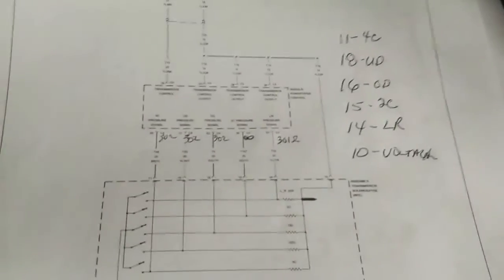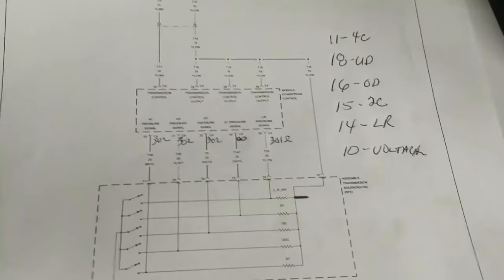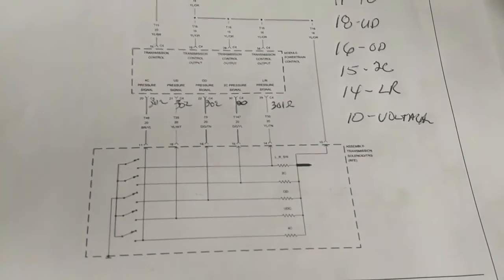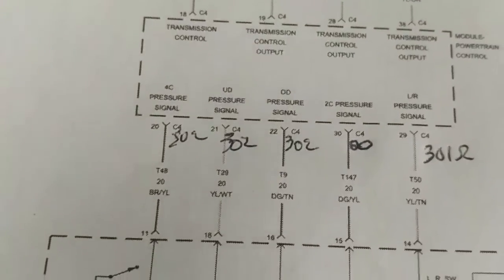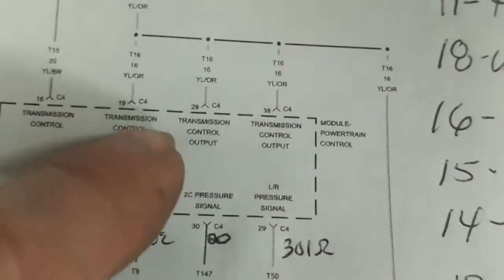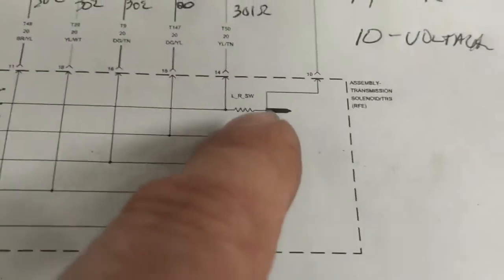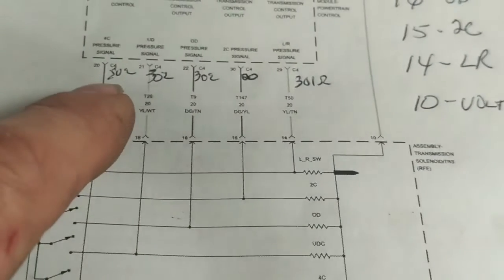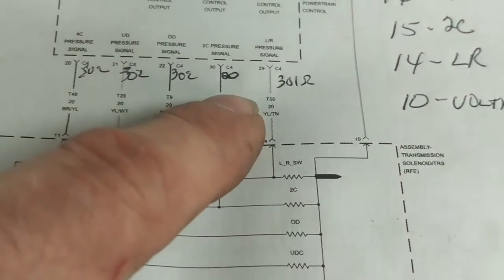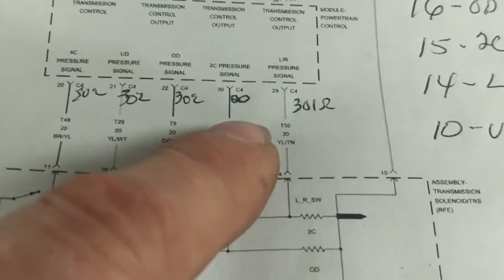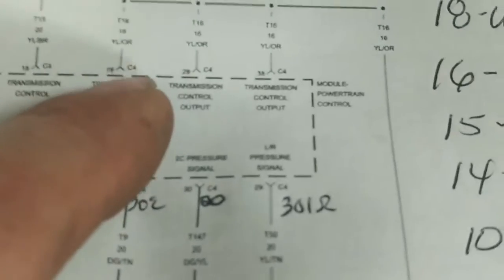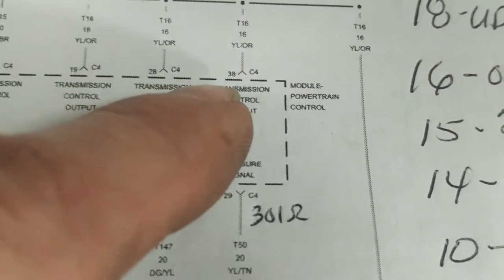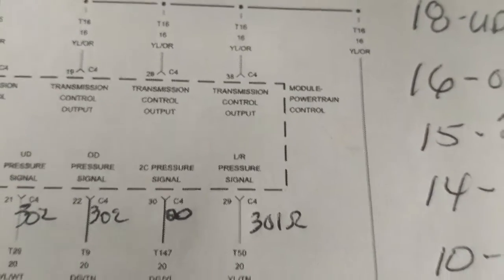The Chrysler troubleshooting chart for this problem calls for a breakout box and a simulator, which I don't have. So I'm checking continuity through the transmission range switch assembly here. From pin 20 all the way over to pin 19, we're measuring the resistance of the resistors — everyone measures okay: 302, 302, 302, 302. But this one, which is the 2C pressure switch signal setting the fault code, measures infinite from pin 30 to pins 19, 28, and 38.